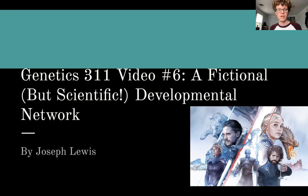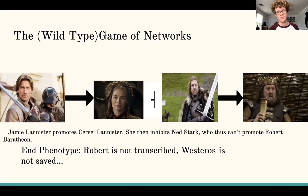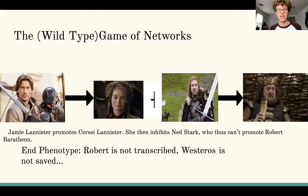So here we have a wild type developmental network where Jaime Lannister, as we know him in the books, promotes Cersei, and Cersei tries to stop or inhibit Ned Stark from helping or promoting Robert Baratheon with the Kingdom of Westeros. So in this wild type, this natural network, Robert is not transcribed because Jaime promotes Cersei, Cersei inhibits Ned, who then can't promote Robert Baratheon, and thus Westeros is not saved.